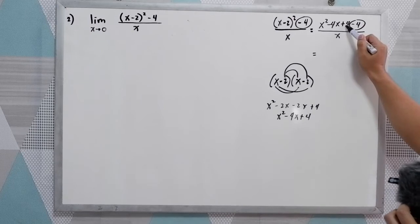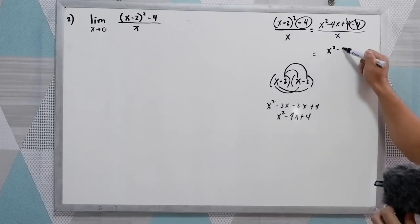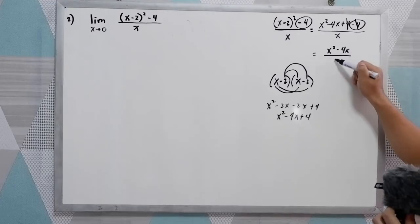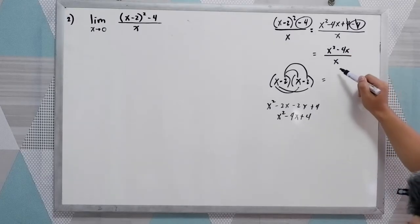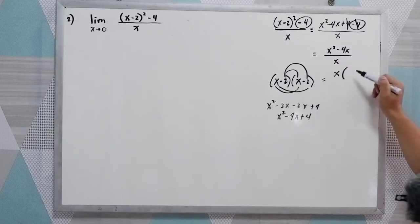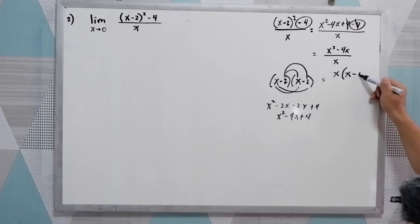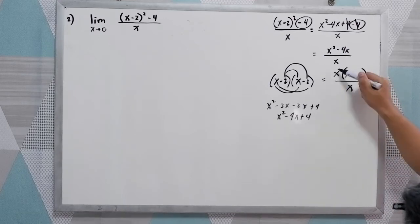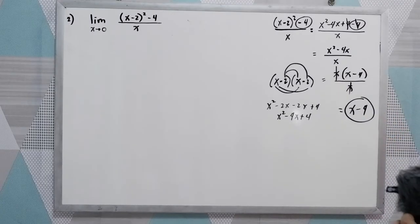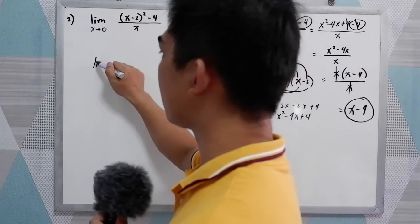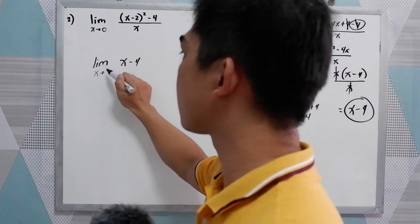Now simplify: the plus 4 and minus 4 combine to 0, leaving x squared minus 4x all over x. We can still simplify — factor out x: x squared divided by x is x, and negative 4x divided by x is negative 4. Cancel the x in numerator and denominator, so the value of the function is x minus 4. We can write this as the limit of x minus 4 as x approaches 0.